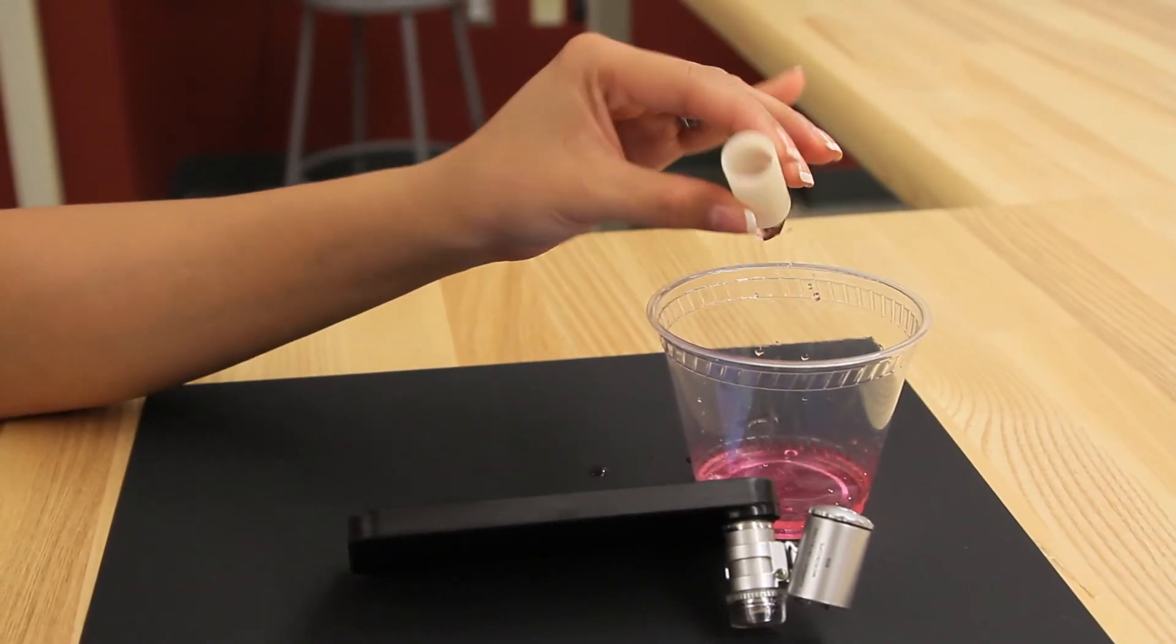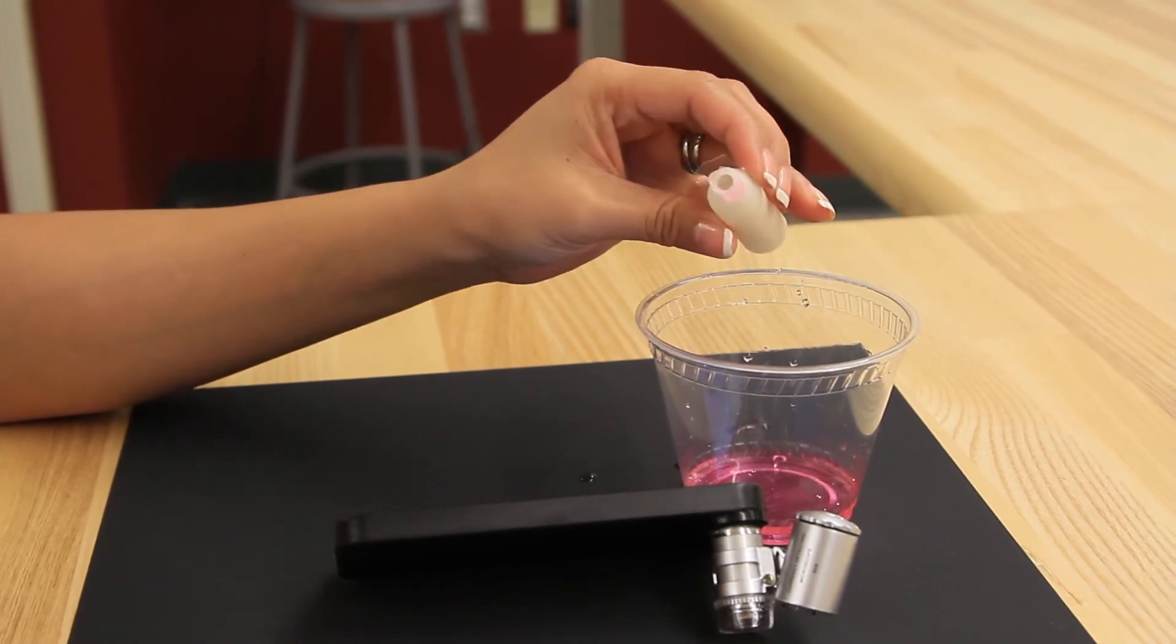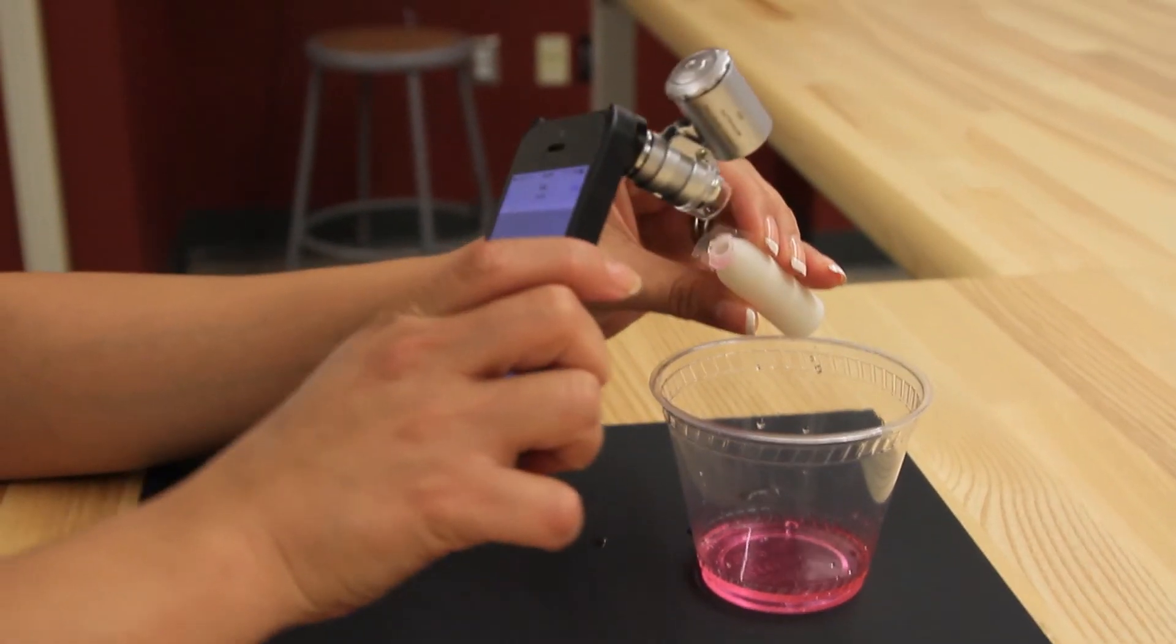Using an affordable and commercially available camera-phone microscope attachment, magnetically labeled cells can readily be enumerated.